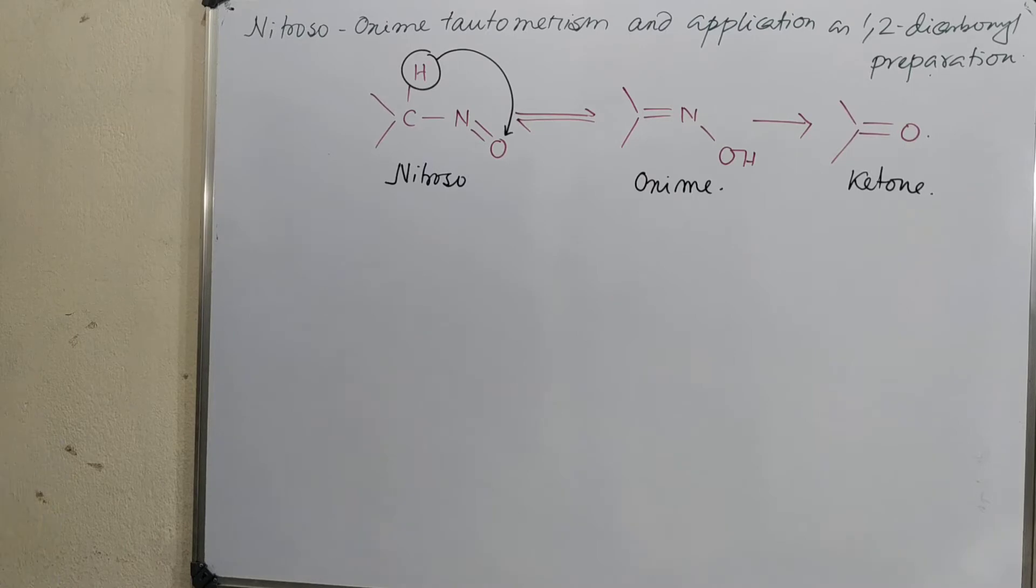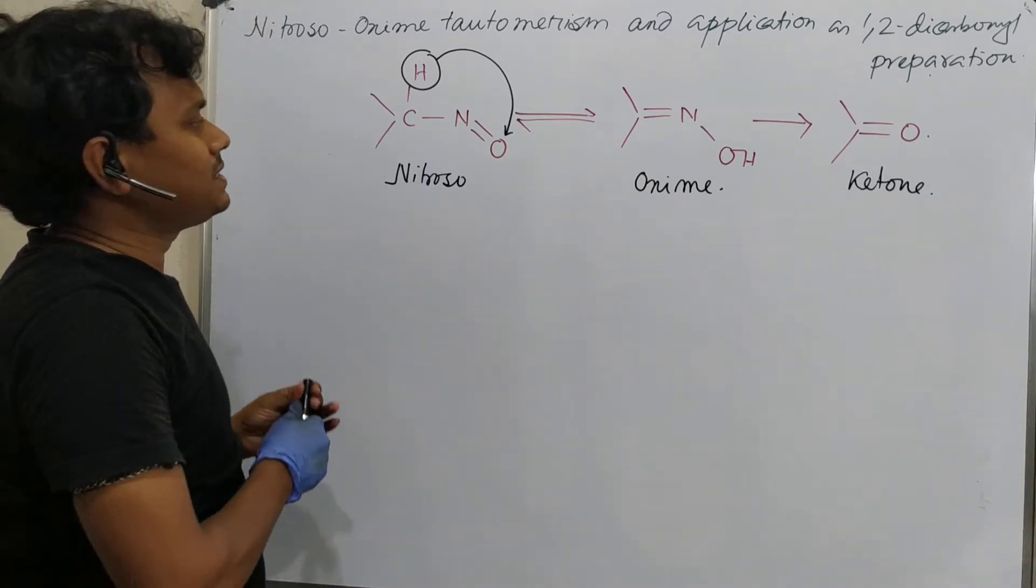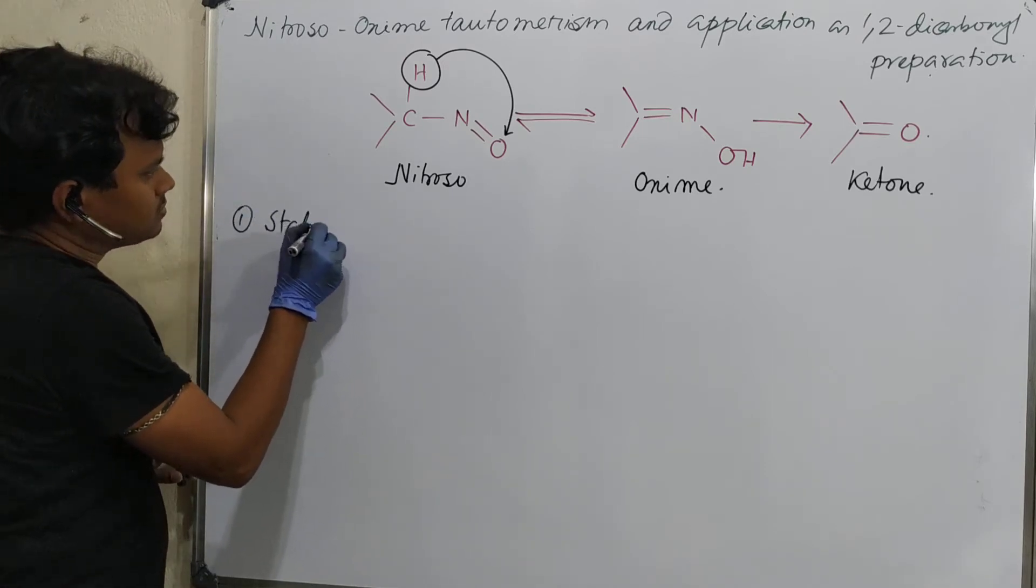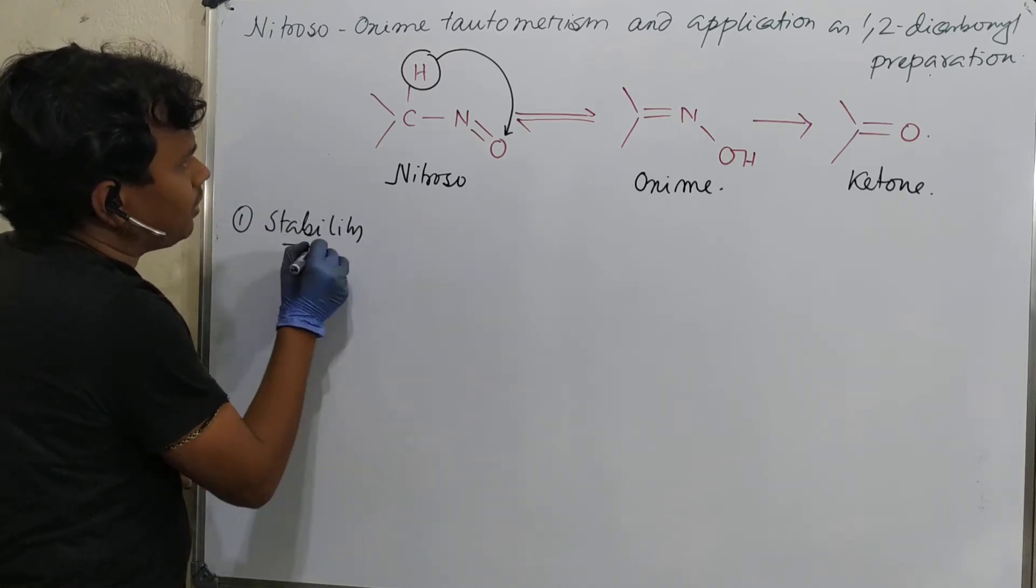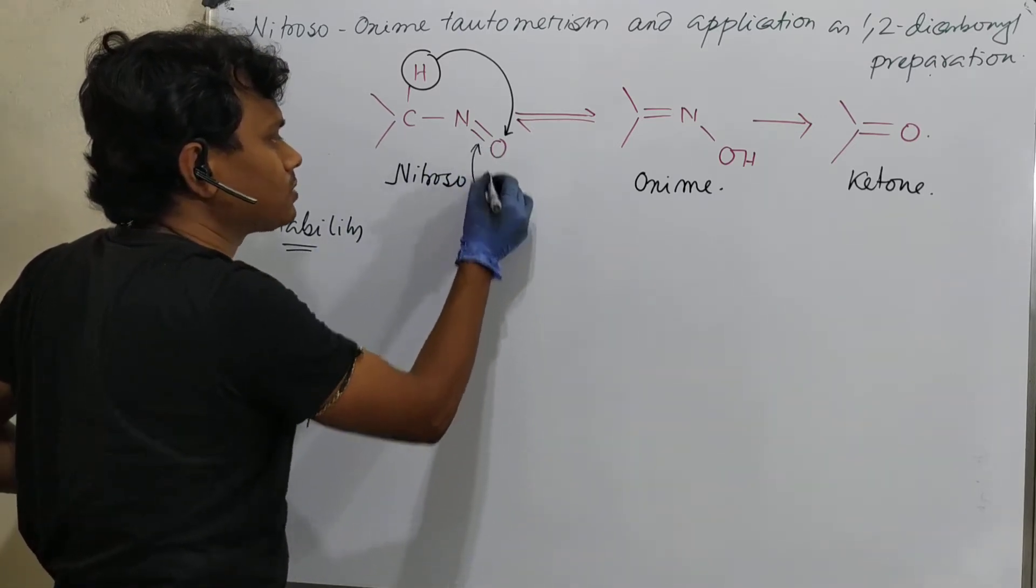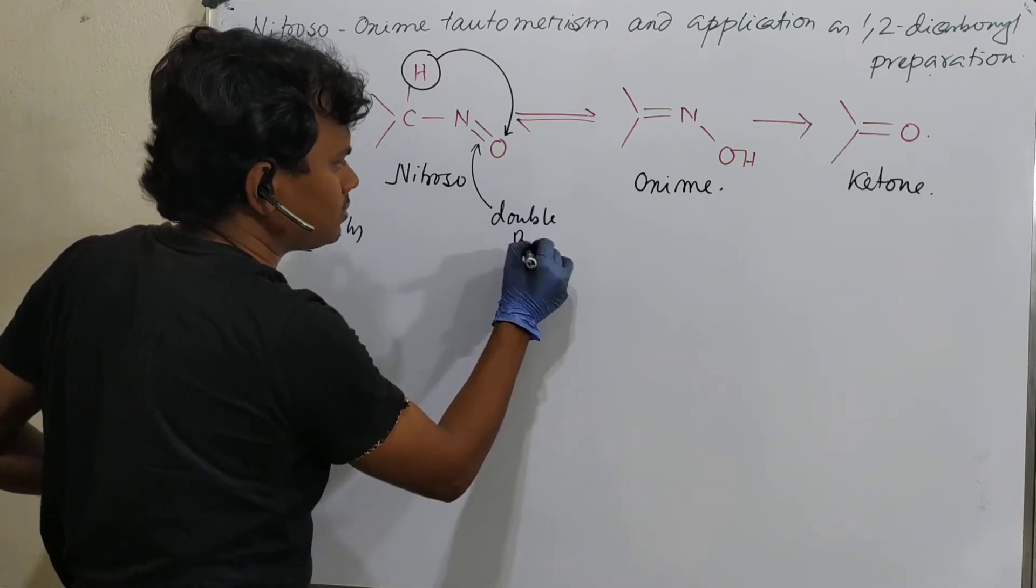Now the question is why does this occur? The main reason is the stability. Why? Because in this case, nitrogen has a double bond with oxygen. So this is the double bond.